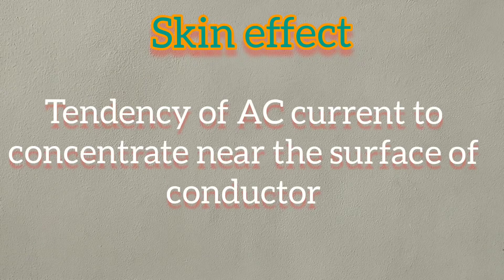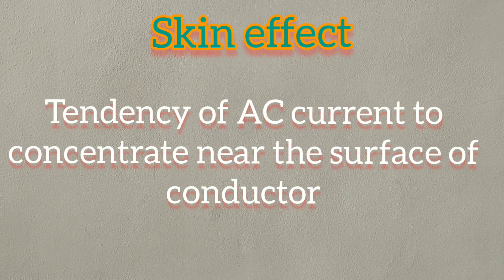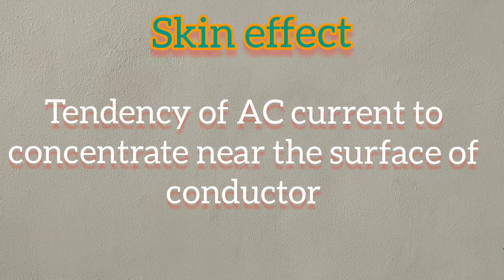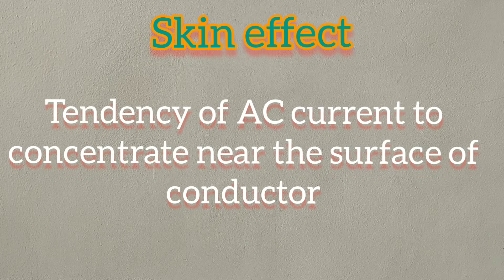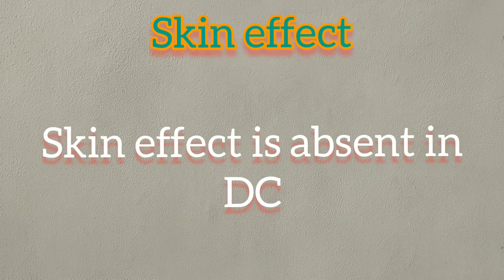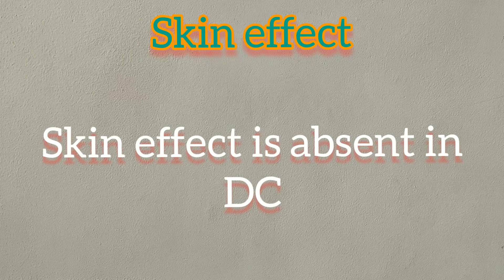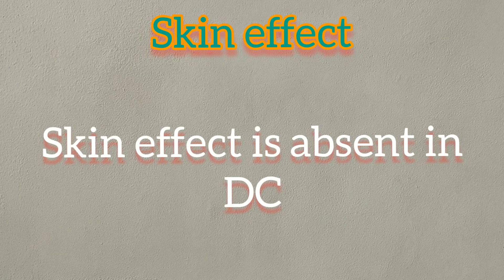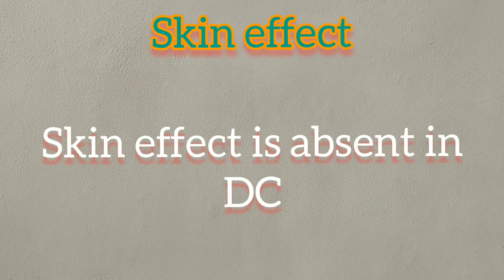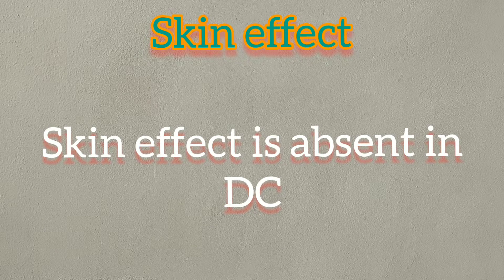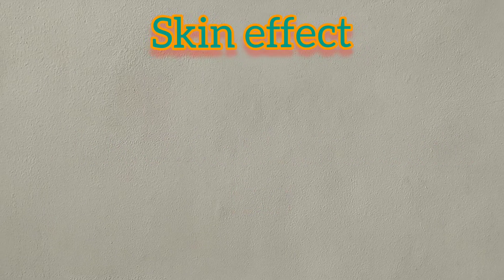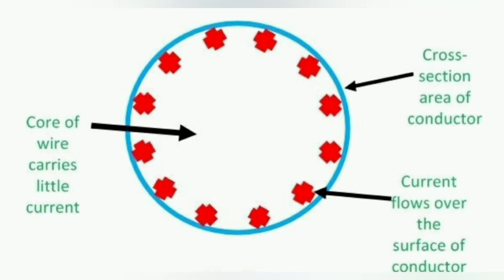The tendency of alternating current to concentrate near the surface of a conductor is known as skin effect. When a conductor is carrying direct current (DC), the current is uniformly distributed over the whole cross-section of the conductor. But when alternating current (AC) flows through the conductor, it does not distribute uniformly; rather, it has the tendency to concentrate near the surface of the conductor. This is known as skin effect.